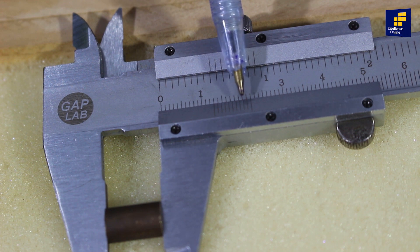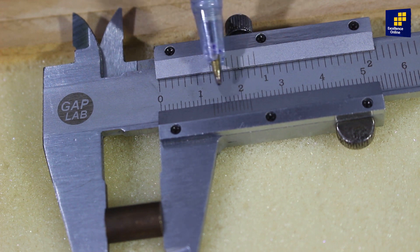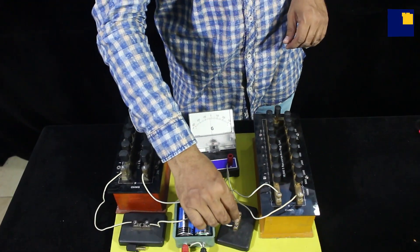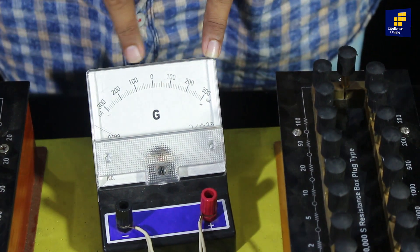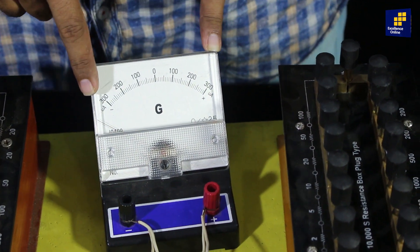So vernier scale reading is 9 divisions and the main scale reading is 1.3 cm. As we insert this key to complete the series circuit, you can see that the pointer of the galvanometer moves. It shows full scale deflection.